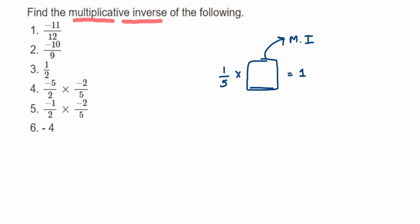With 1/5, I have to multiply 5/1 so that these numbers cancel out and I get the answer 1. As you can see, 1/5 and 5/1 are reciprocals of each other. This is the reciprocal of 1/5.